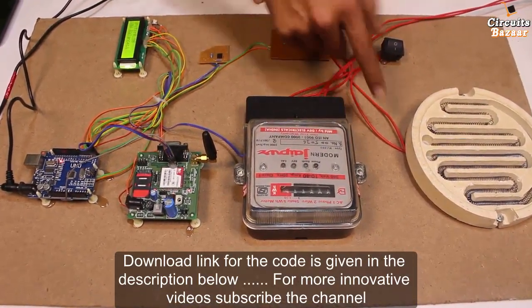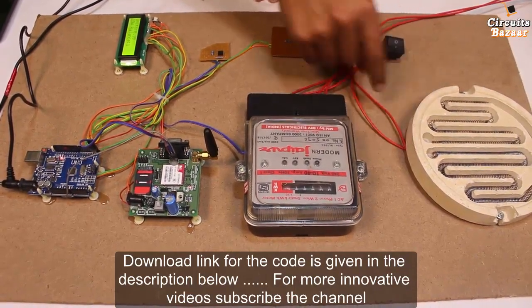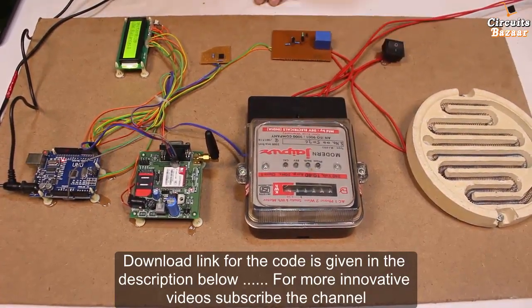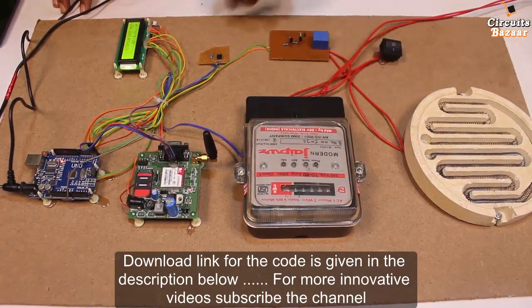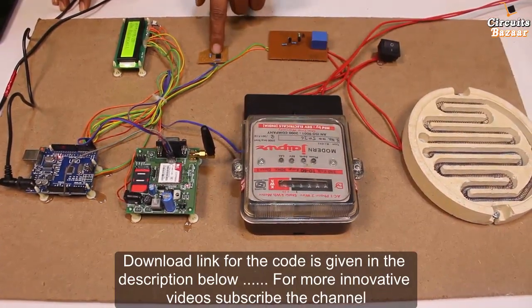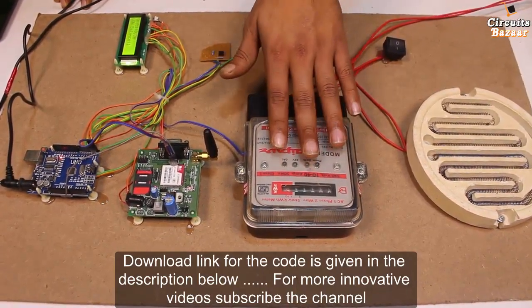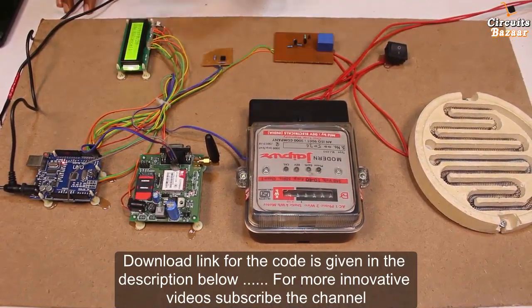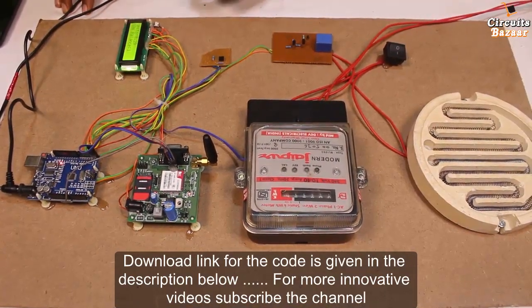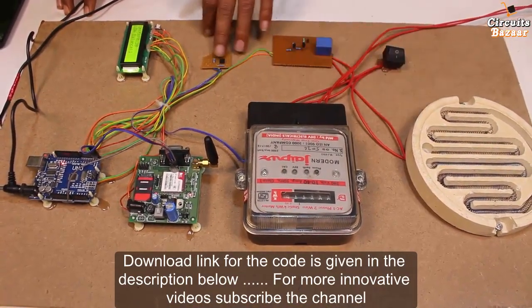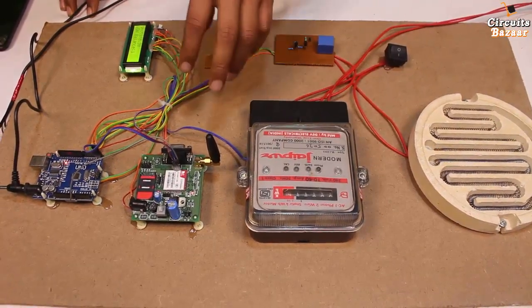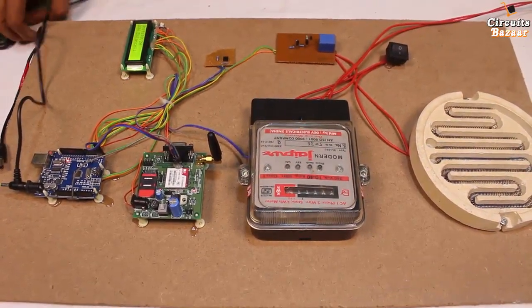And ultimately, relay will turn on and off the output load. So output load, you can turn on and off through this button. And as I already told you, this optocoupler is basically used to interface this energy meter to the Arduino, because Arduino will get the energy or reading consumed through this optocoupler. And now we are going to see the live working of our project.